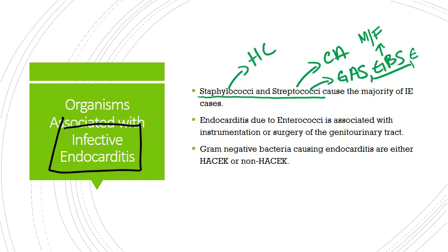We're also going to talk about Group D strep, which we'll cover in this video, as well as a group of organisms known as the viridans streptococci. And the non-groupable ones like Strep pneumo should also be included — Strep pneumo can certainly cause infective endocarditis.